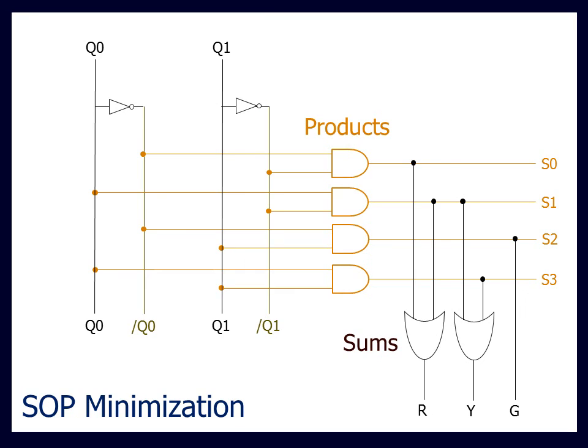This means that, in general, it is possible to simplify this array by performing SOP minimization using, for instance, Boolean algebra or a Karnaugh map. This could greatly simplify our overall design.